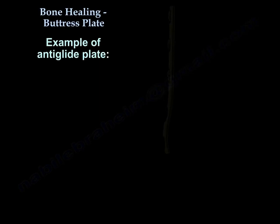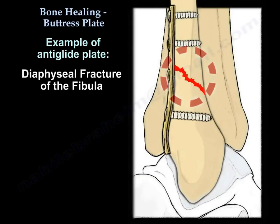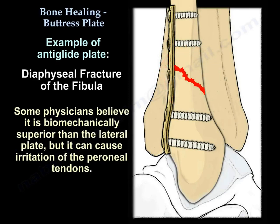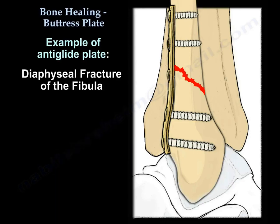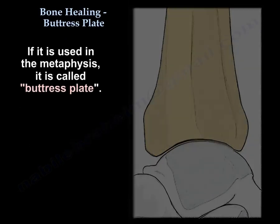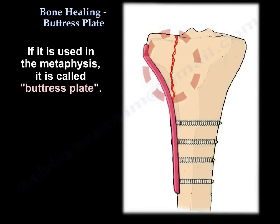An example of the anti-glide plate is its use with the diaphyseal fracture of the fibula. Some people think it is biomechanically superior to the lateral plate, but it can cause irritation of the peroneal tendons. Because it is used in the diaphysis, it is called an anti-glide plate; if used in the metaphysis, we call it a buttress plate.